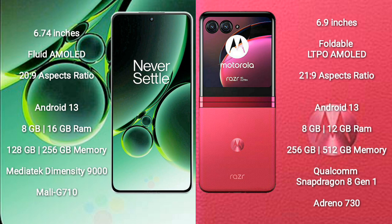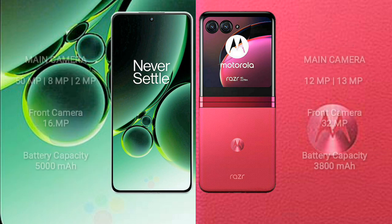Motorola Razr 40 Ultra runs on Android 13 and comes with 8GB or 12GB RAM and 256GB or 512GB internal storage. It is powered by a Qualcomm Snapdragon 8 Gen 2 processor with an Adreno 730 GPU.